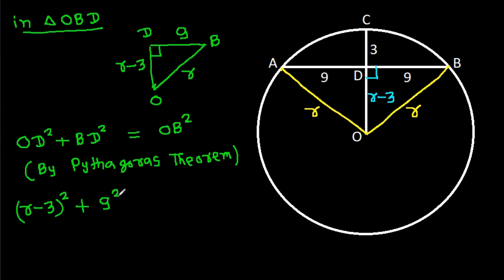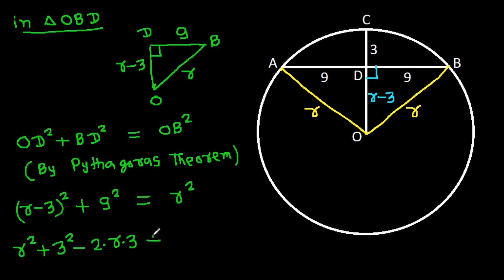Now in right triangle OBD, applying the Pythagorean theorem: BD squared equals OB squared. So we have (R minus 3) squared plus 9 squared equals R squared, which gives R squared minus 6R plus 9 plus 81 equals R squared, and R squared cancels.